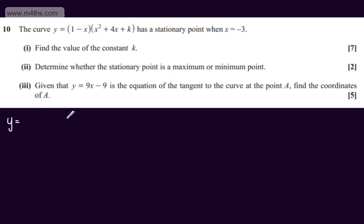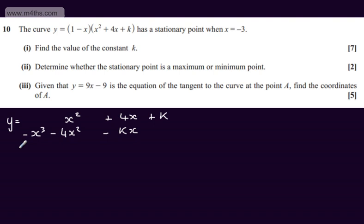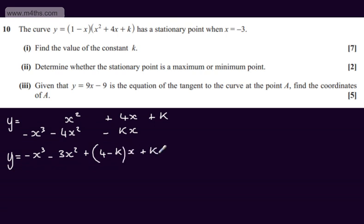Starting with 1, we're going to have y equals x squared, then plus 4x, and plus k. Multiplying through by the minus x, we're going to have minus x cubed, then minus 4x squared, then minus kx. So collecting like terms, y equals minus x cubed, minus 3x squared, then plus the quantity 4 minus k multiplied by x, plus k.